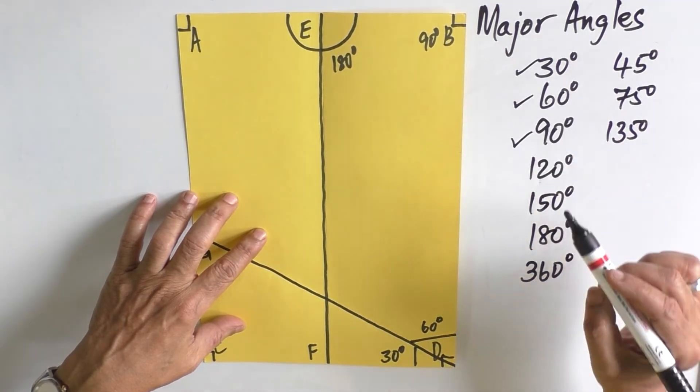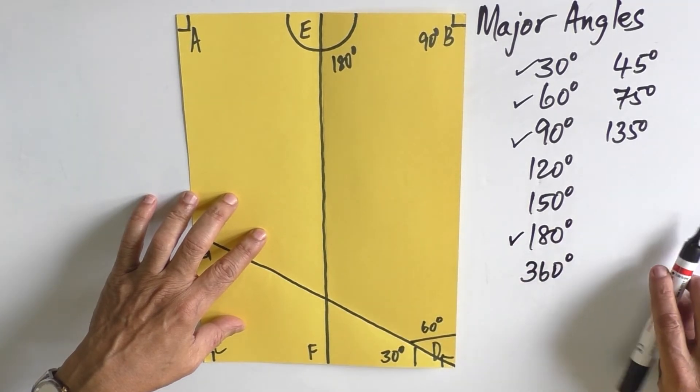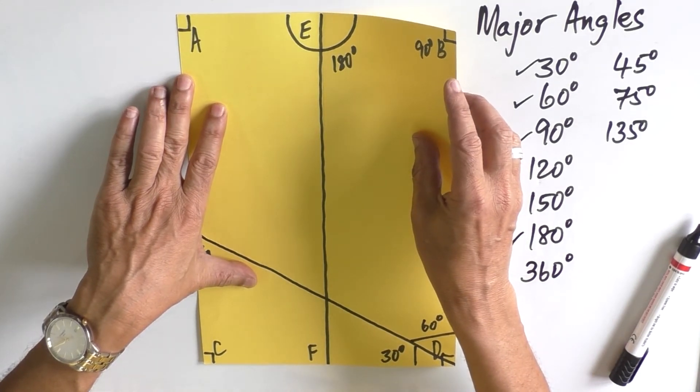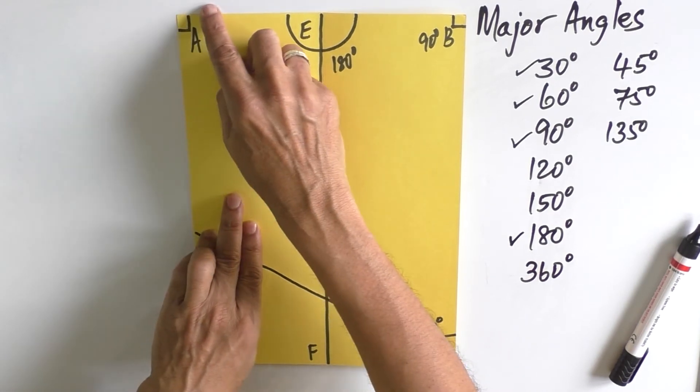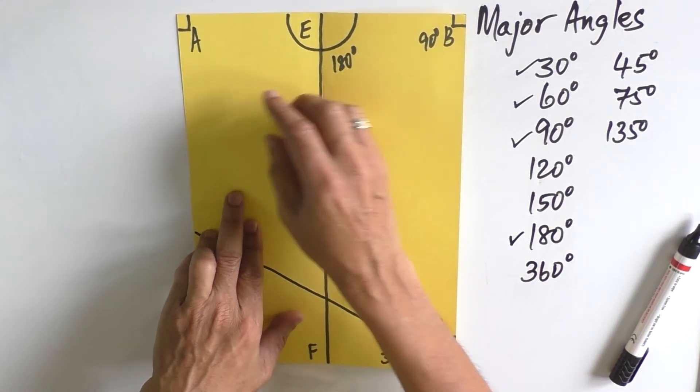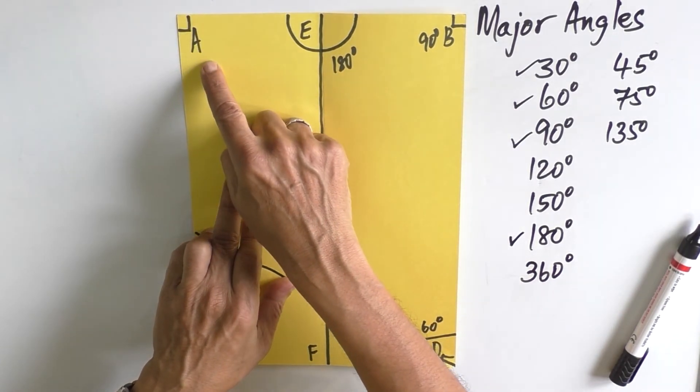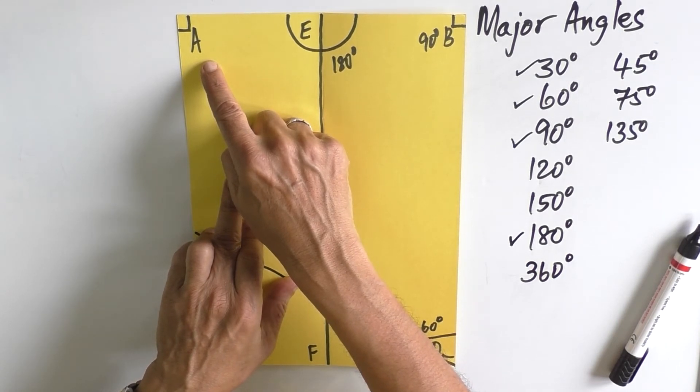So now we have angles of 30 degrees, 60 degrees, 90 degrees, and 180 degrees. Suppose we want to know how a 45-degree angle is formed. Now, angle A is 90 degrees. If we divide angle A exactly into two parts, each part will be 45 degrees.